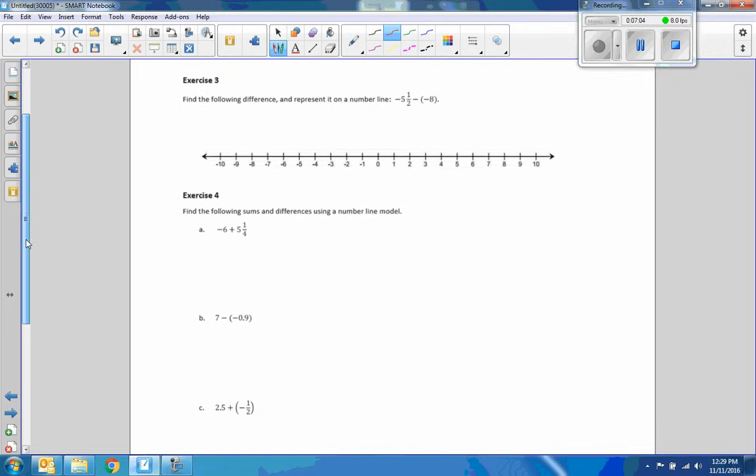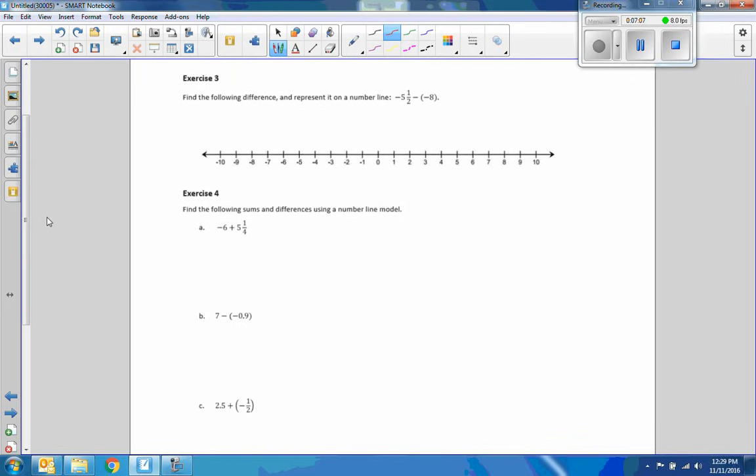Exercise three. Pause the video. Try this. When you're done, come back. Now that you've done it, let's take a look. Find the following difference and represent it on a number line. Negative five-and-a-half minus negative eight. So, if we follow the directions from before, you start at the starting point, which is negative five-and-one-half. And think of it as discarding that negative eight from your hand. Your hand value is going to increase, so minus negative is plus. One, two, three, four, five, six, seven, eight. That's where I end up at, two and a half.